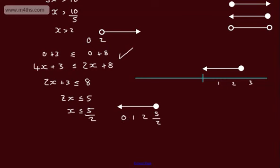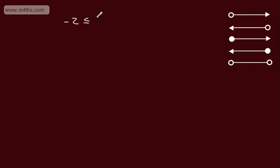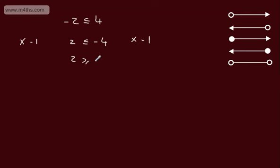That's another example of a basic linear inequality. In both examples we divided by a positive number. However, if we multiply or divide an inequality by a negative number, we need to change the sign around. Consider minus 2 is less than or equal to 4. If I multiply both sides by minus 1, I get 2 and minus 4. That no longer holds true with the same sign — with an equation it would have. So we should write 2 is greater than or equal to minus 4. When multiplying or dividing by a negative number, we change the inequality sign around.